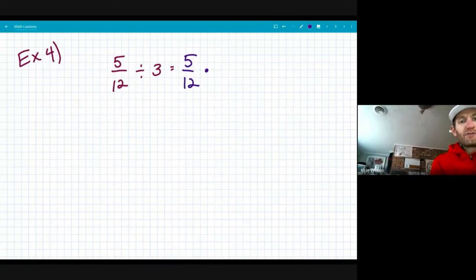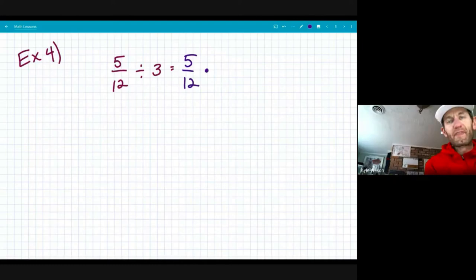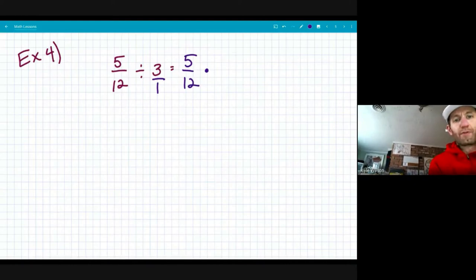I'm going to change my operation to multiplication and I'll be multiplying by the reciprocal of three, or three over one. And in that case, the reciprocal is one third.